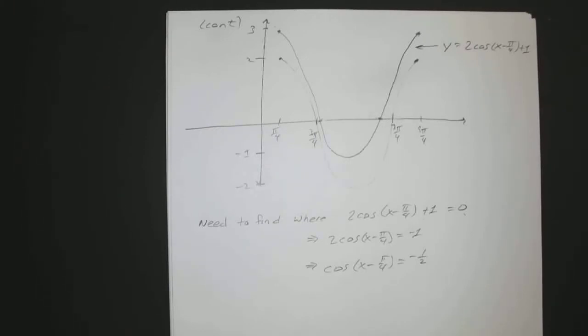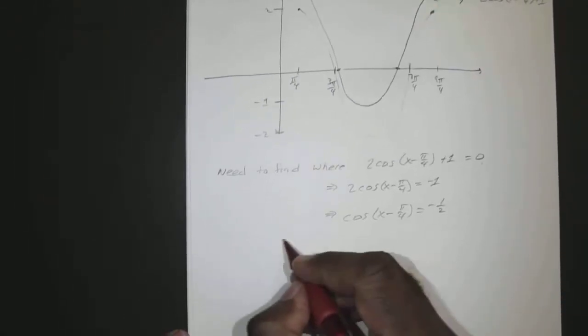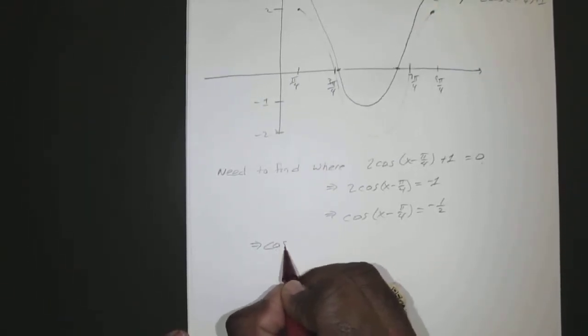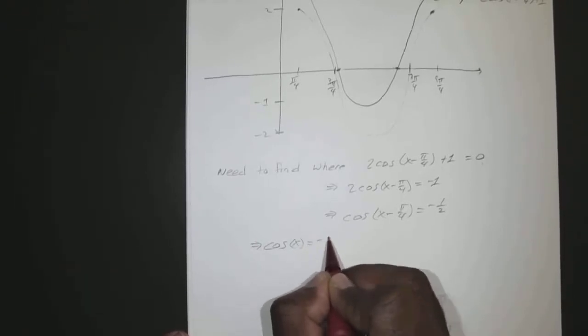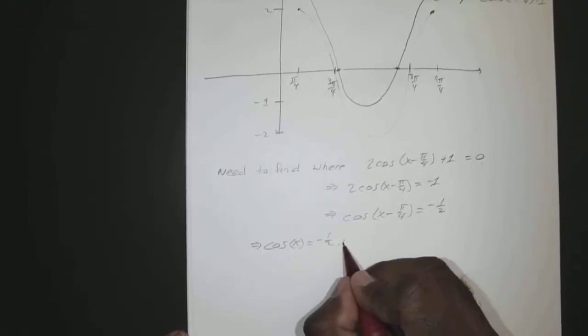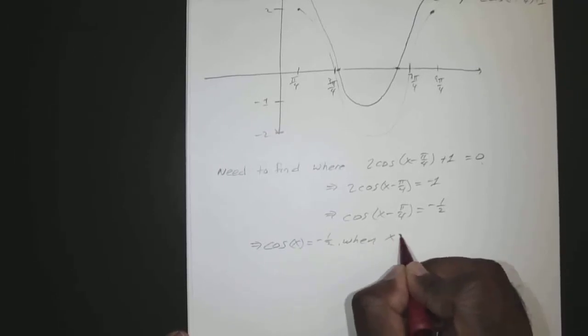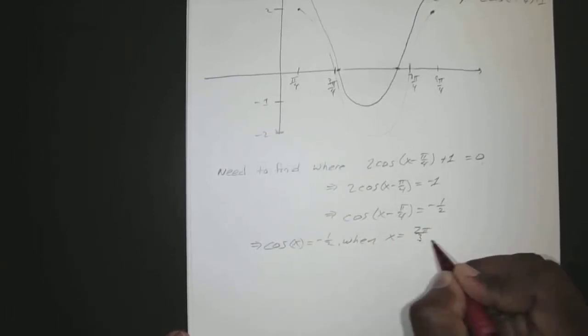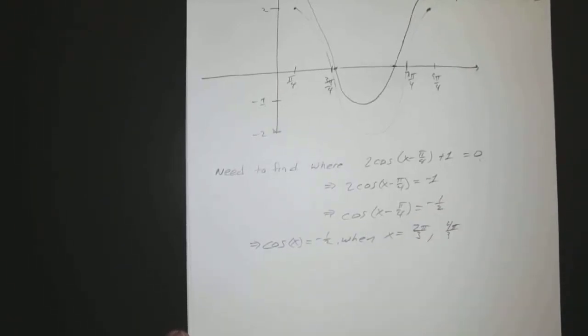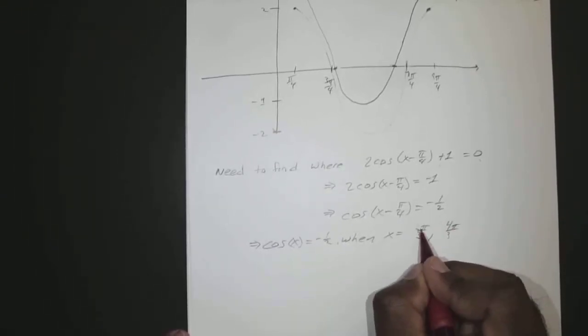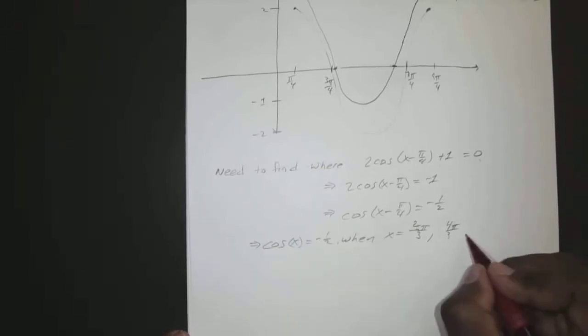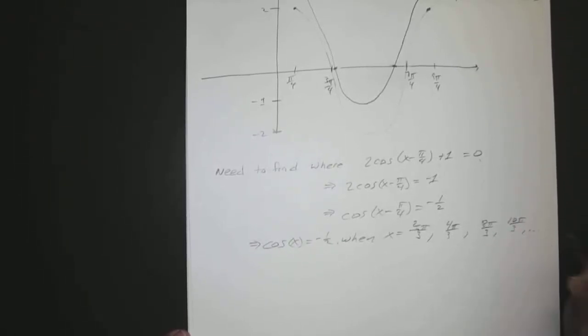So that means for this to be true, we need to know that cosine of x equals negative 1 half when x equals 2 pi over 3, 4 pi over 3. Oh, let me clean up, that looks like a 7. I don't want any mistakes made because of my bad penmanship. 8 pi over 3, 10 pi over 3, and et cetera, and so on.